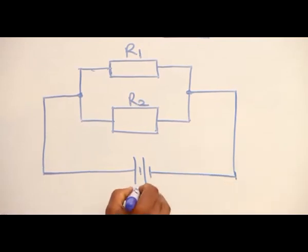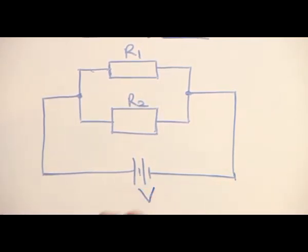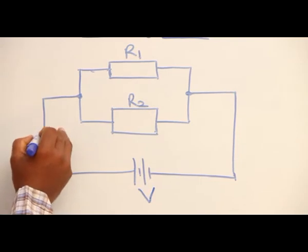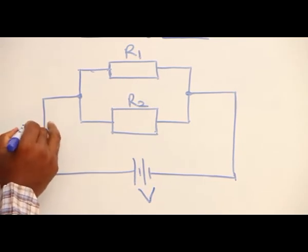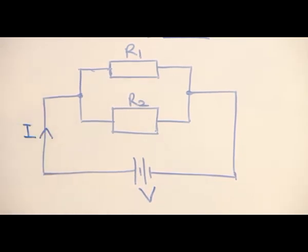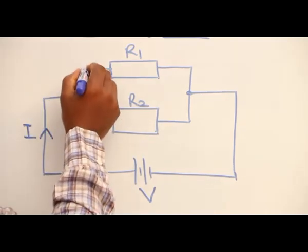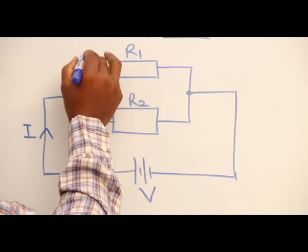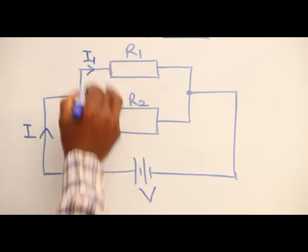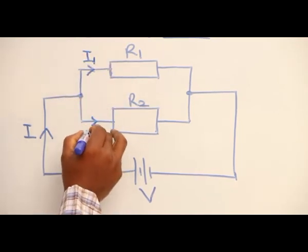Of voltage V, and the current generated from the battery is I, capital letter I. The current, on getting to this junction, divides into two parts. We have I1 and I2.